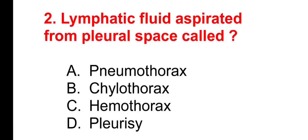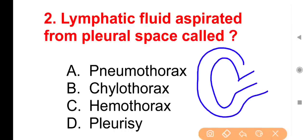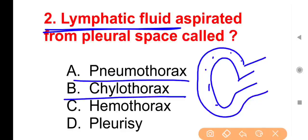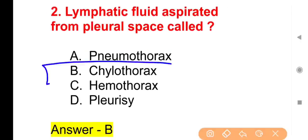Question number 2: Lymphatic fluid aspirated from the pleural space is called — Option A, Pneumothorax; Option B, Chylothorax; Option C, Hemothorax; Option D, Pleurice. The right answer is Option B — it is Chylothorax.